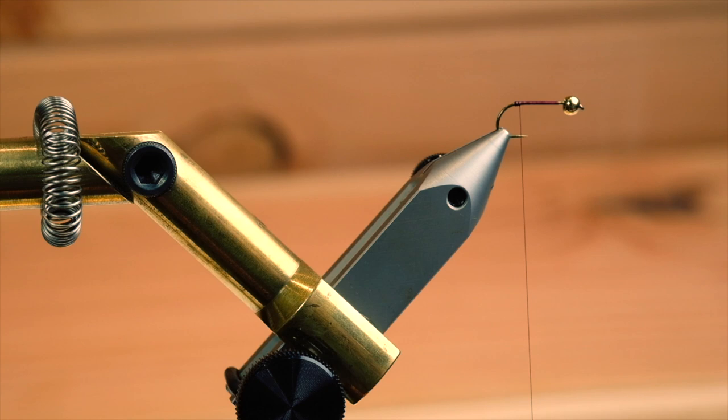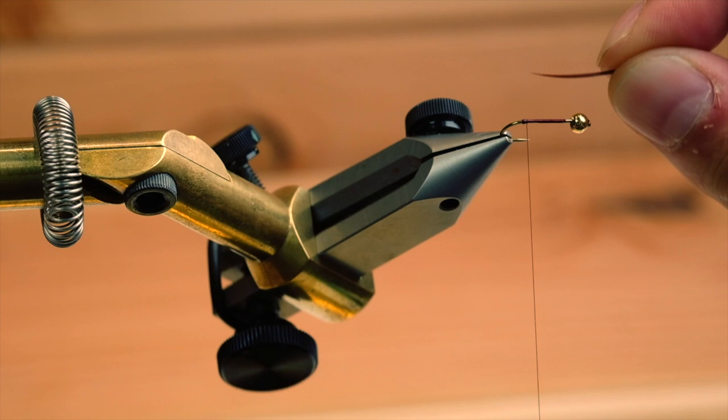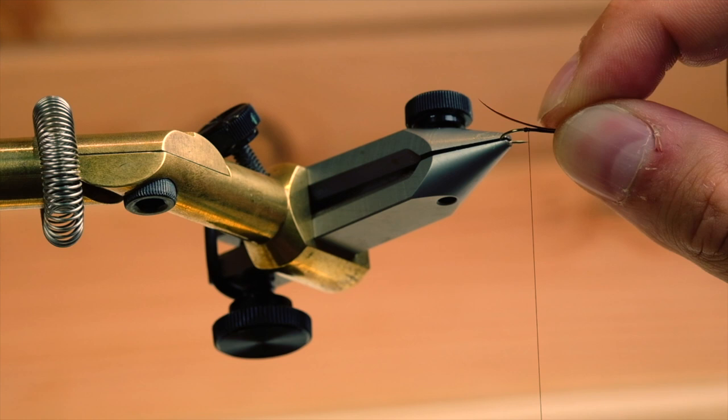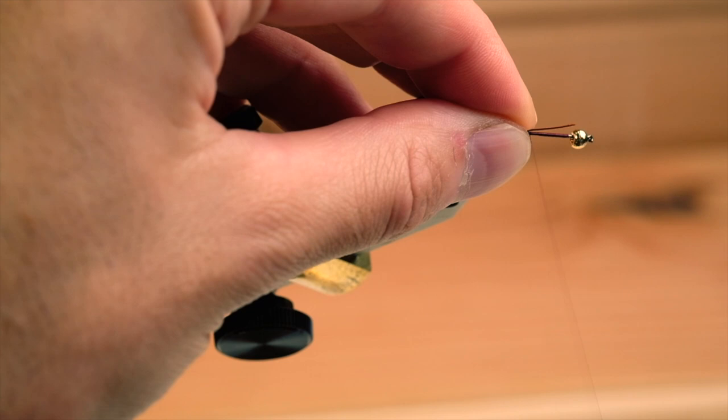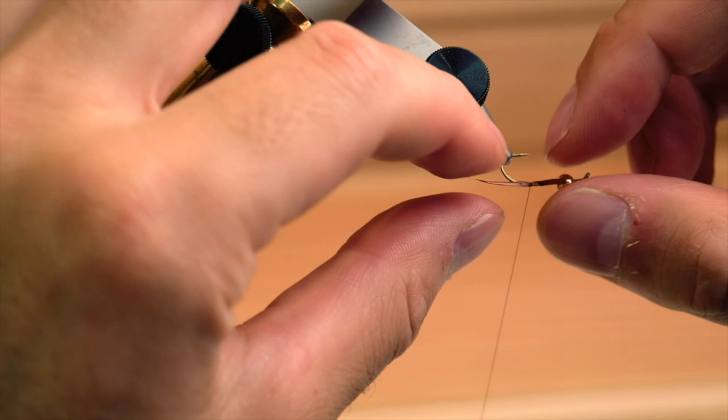Take some goose biots. If you look closely you'll see that the tip is a little bit concave. Turn the vise, measure it, and make sure that little point goes outwards. Two wraps is enough. Check it, make sure it's on the side.